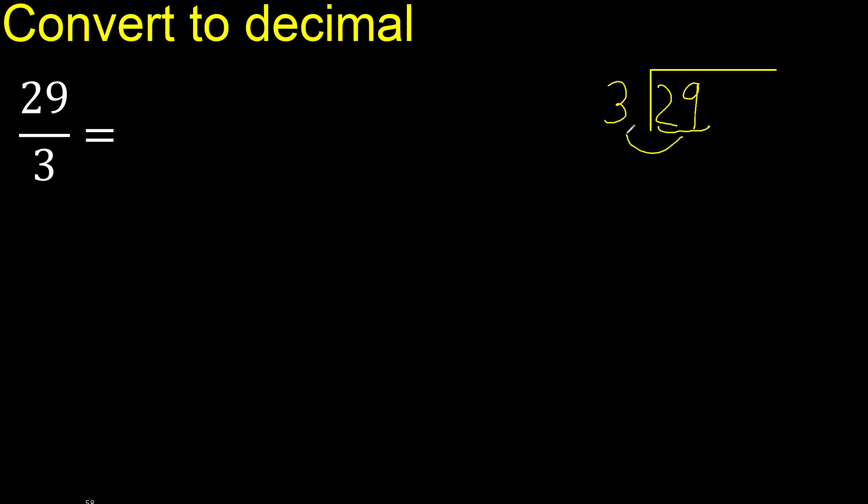29 is not less, therefore with 29, 3 multiplied by which number is nearest to 29 but not greater? 3 multiplied by 9 is 27, ok, is not greater. Multiply by 9, 27.